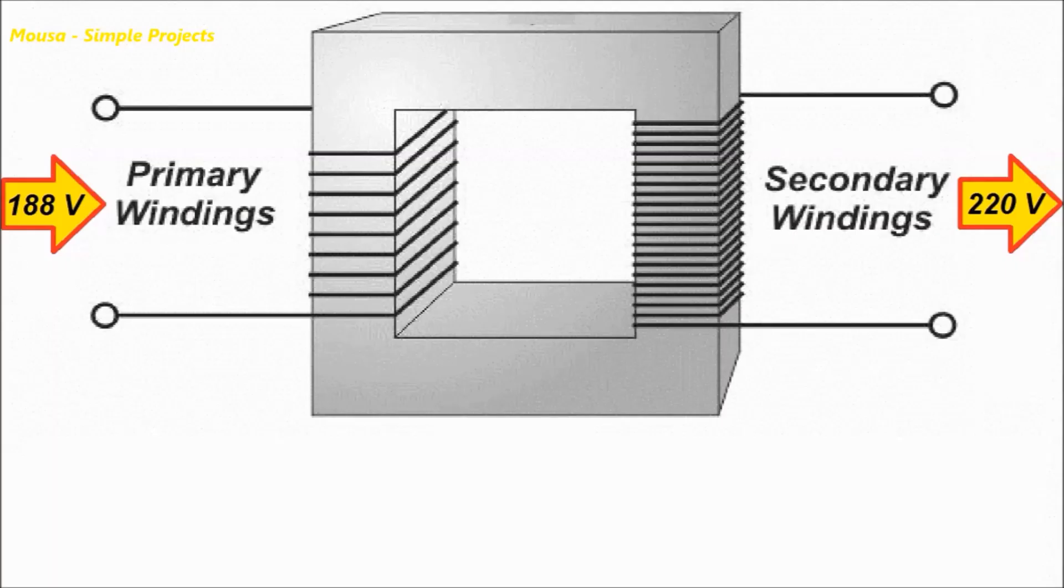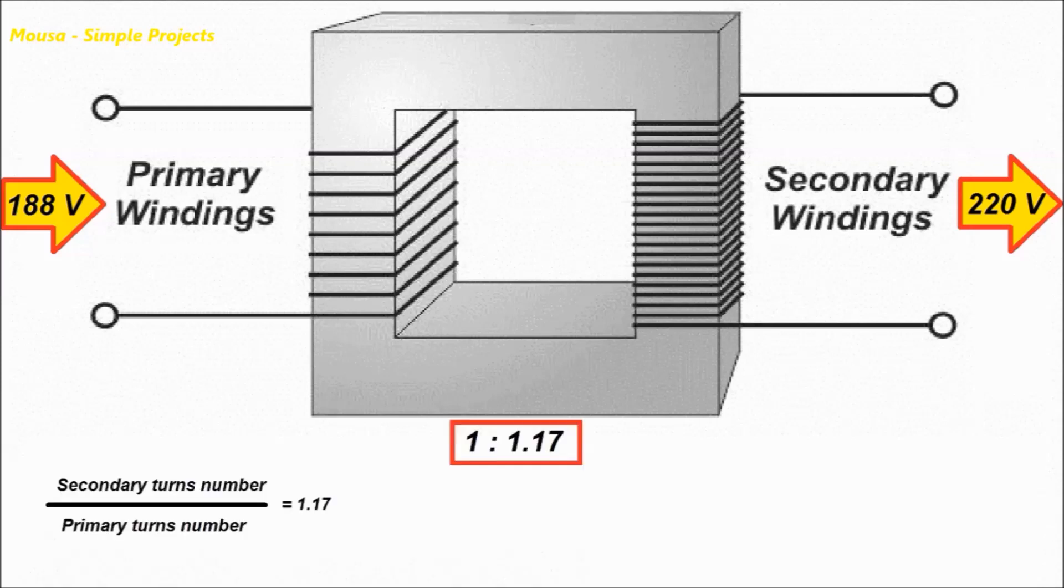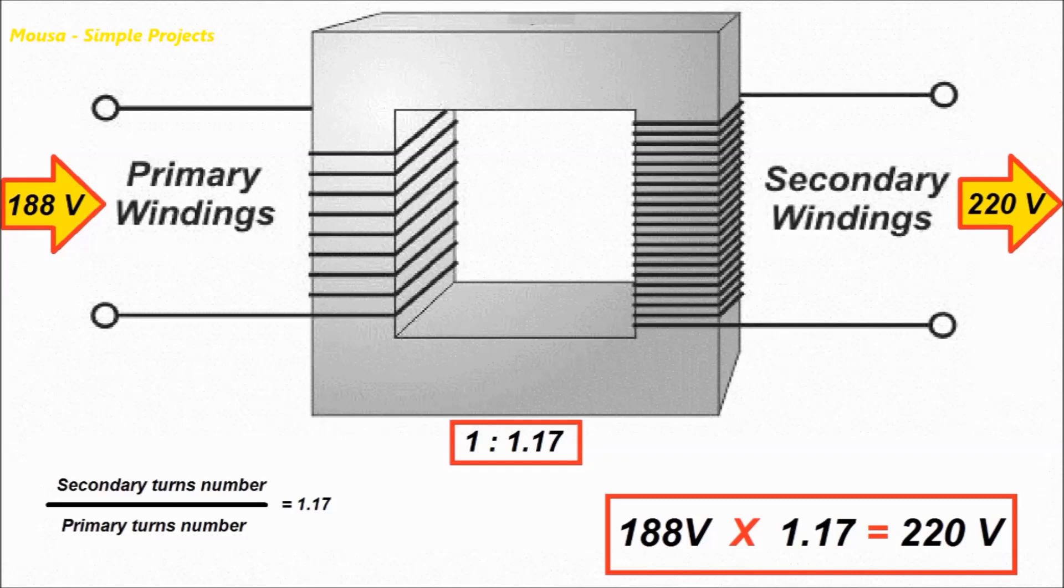To solve this problem simply we can use a transformer. In this case the ratio of the secondary turns number to the primary turns number should be 1.17. That means the 188 volts at the primary side of the transformer multiply by 1.17, so the voltage at the secondary side will be 220 volts.